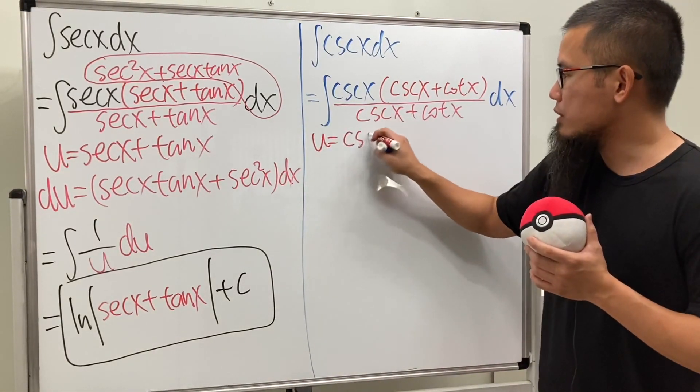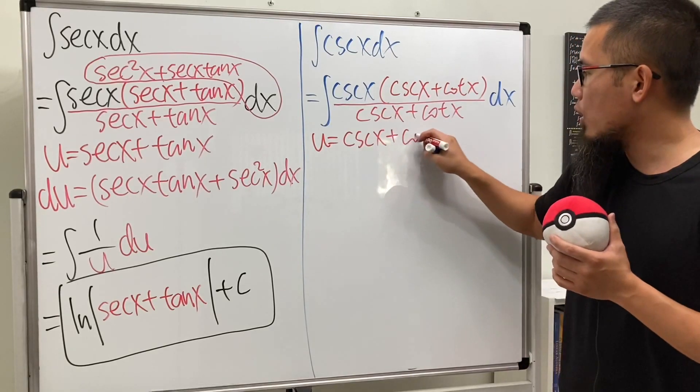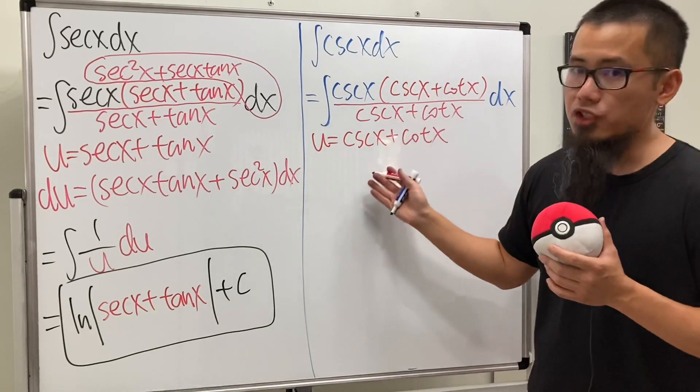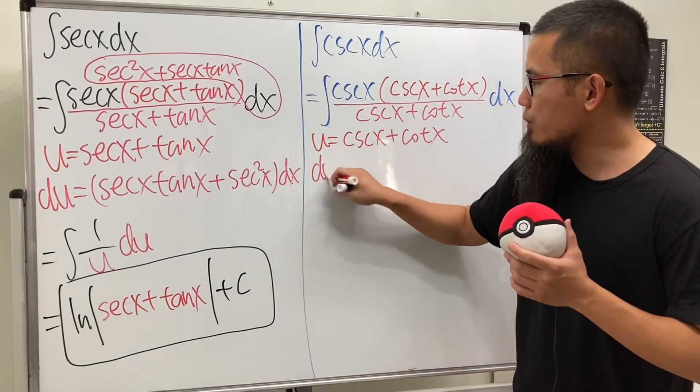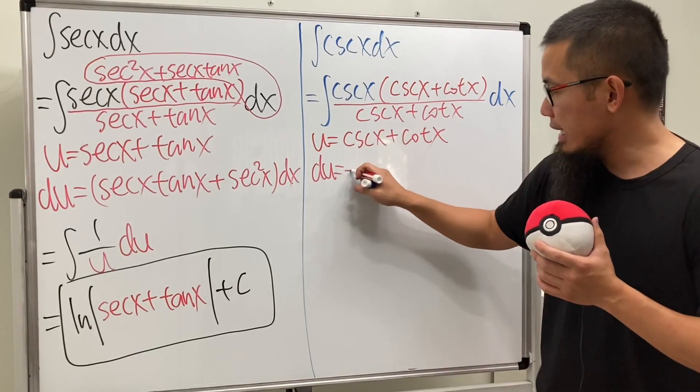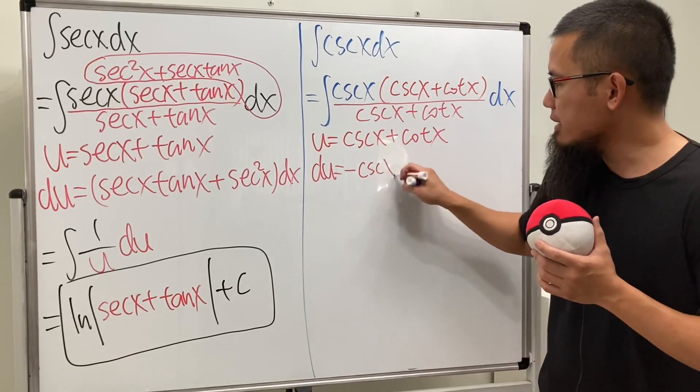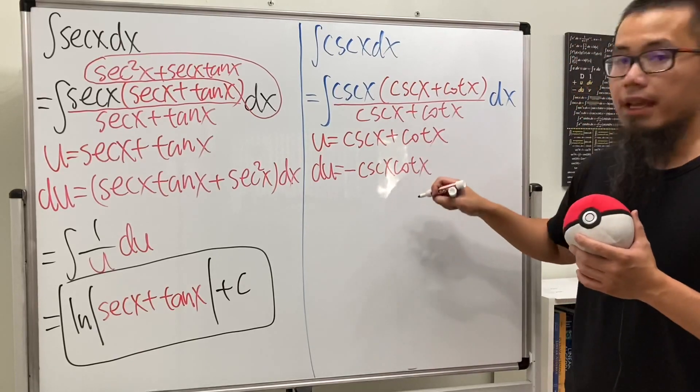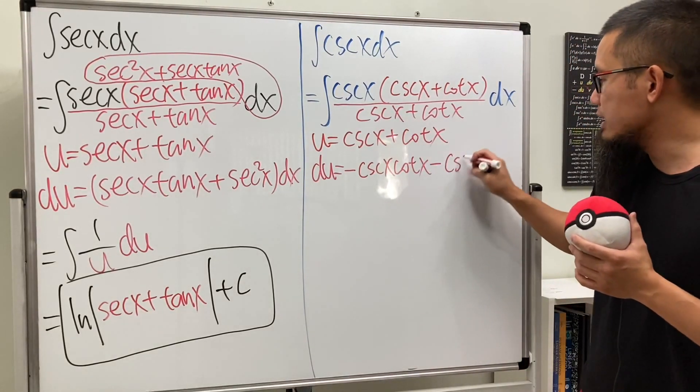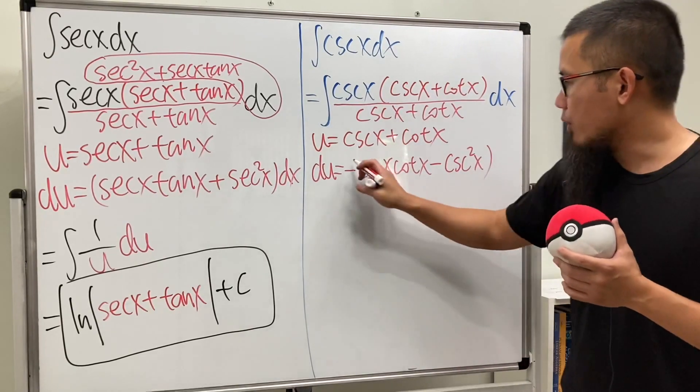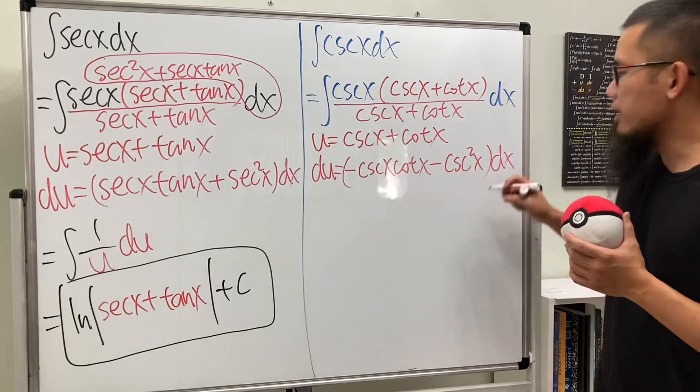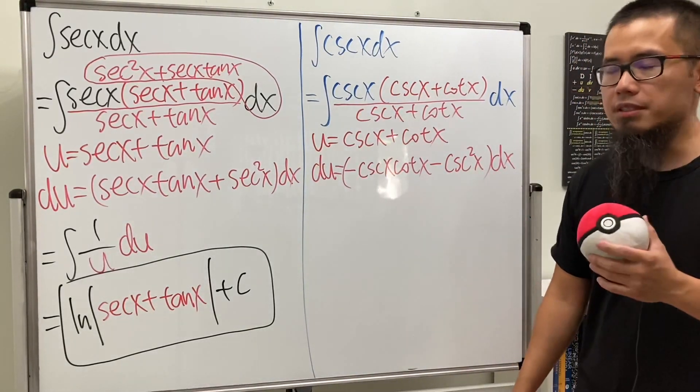Do the same thing. Let u equal the bottom, which is cosecant x plus cotangent x. And then differentiate this, we get du. And the derivative of that is negative cosecant x times cotangent x, and the derivative of this is negative cosecant squared x. So all this inside the parentheses and then put on the dx right here. Now check this out though.